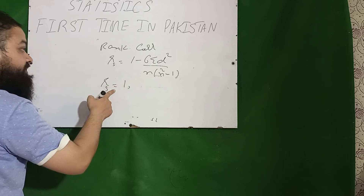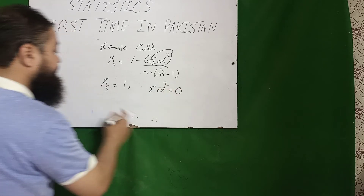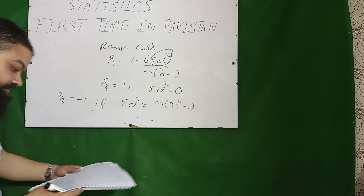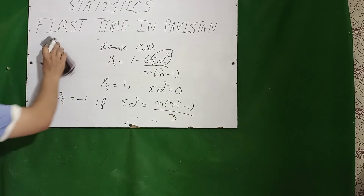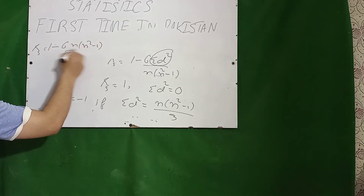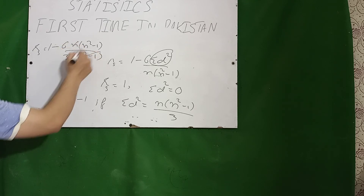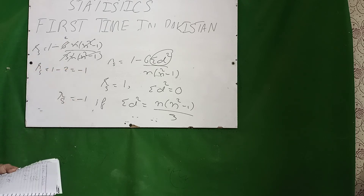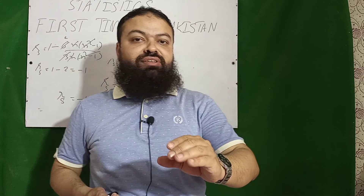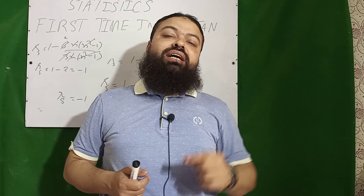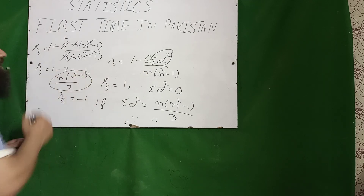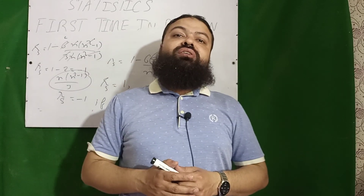When rs = 1, it means Σd² = 0. When rs = −1, it means Σd² = n(n² − 1)/3. I will prove it: substituting this value into the formula gives rs = 1 − 6 × [n(n² − 1)/3] / [n(n² − 1)] = 1 − 2 = −1. So the range of rank correlation is −1 to +1. This is a very important concept. Assalamu Alaikum.